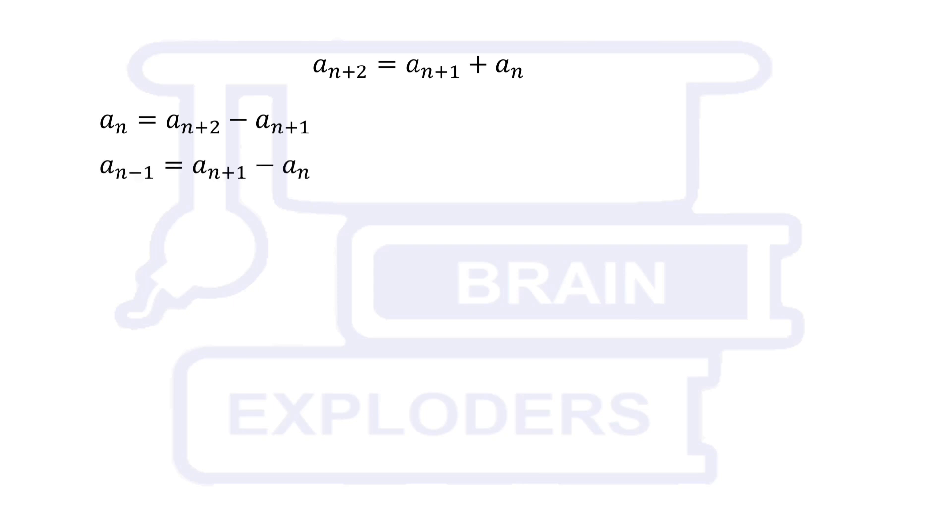In this way, we can also write an minus 1 equals to an plus 1 minus an, an minus 2 equals to an minus an minus 1 and so on up to a1 equals to a3 minus a2.